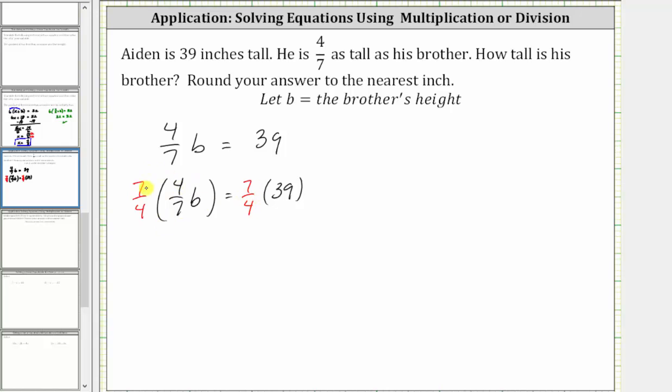On the left side of the equation, 7/4ths times 4/7ths is equal to one, because the fractions are reciprocals. We're multiplying, we have 28/28ths, which is equal to one.